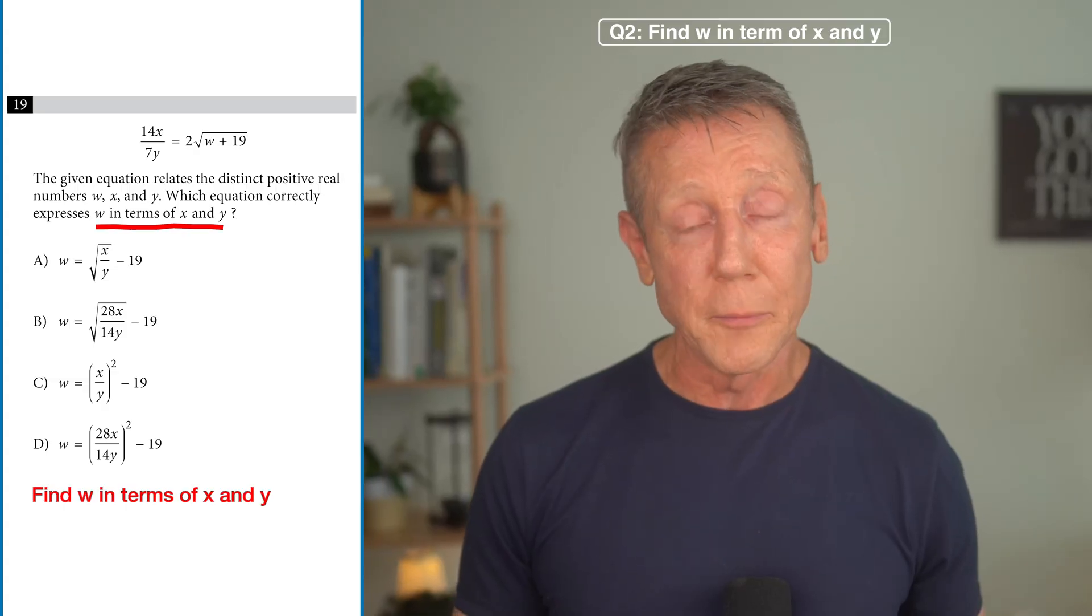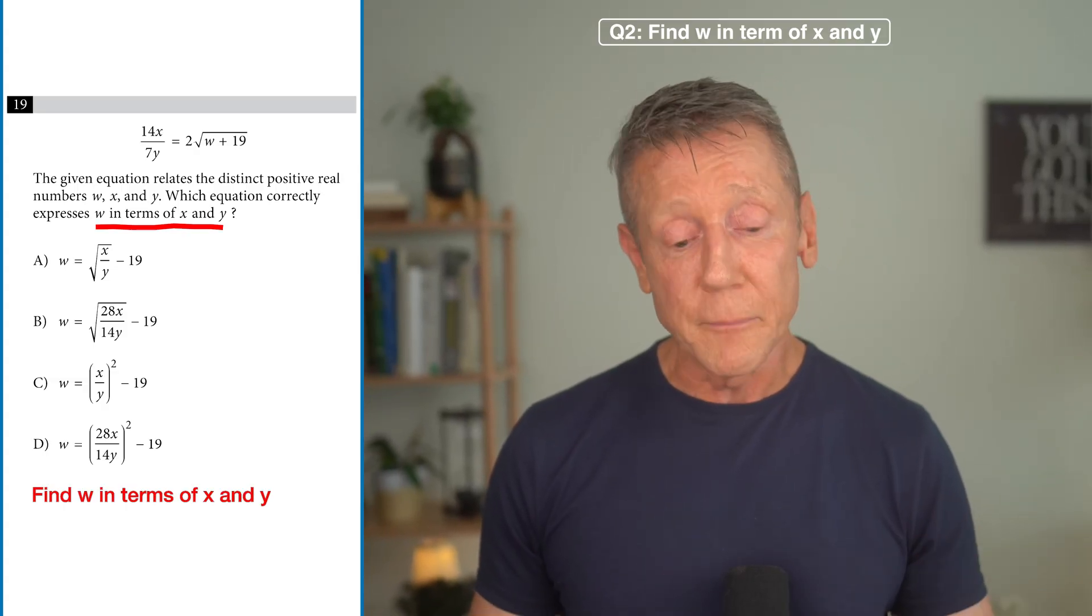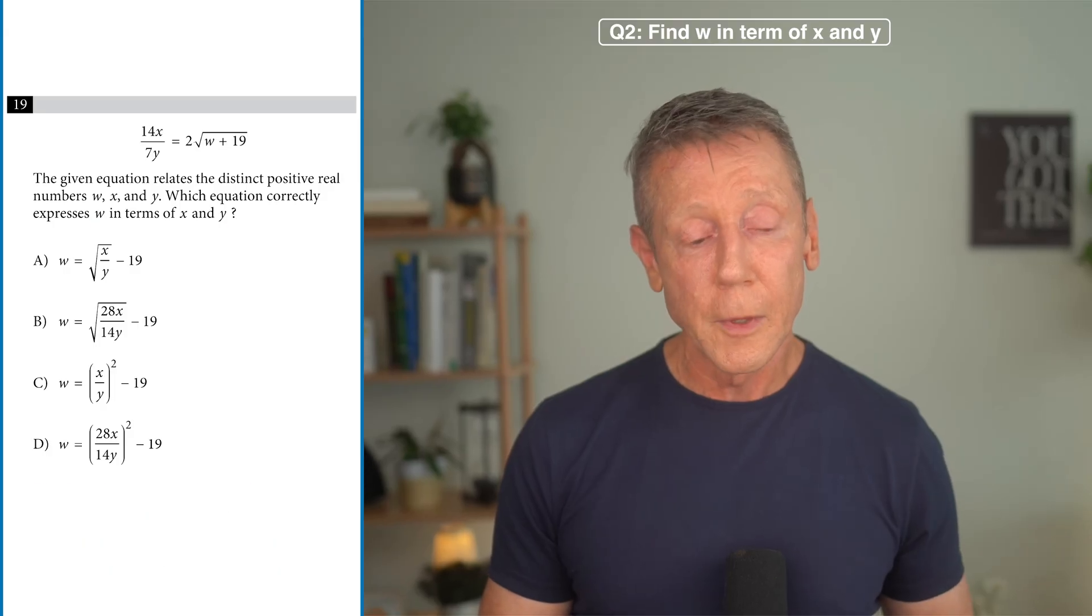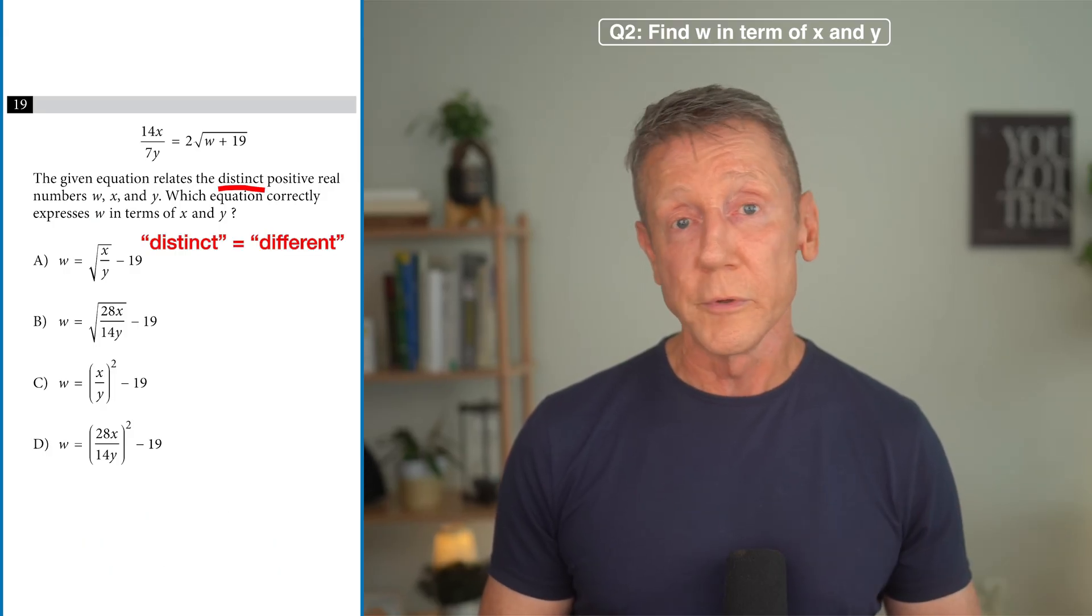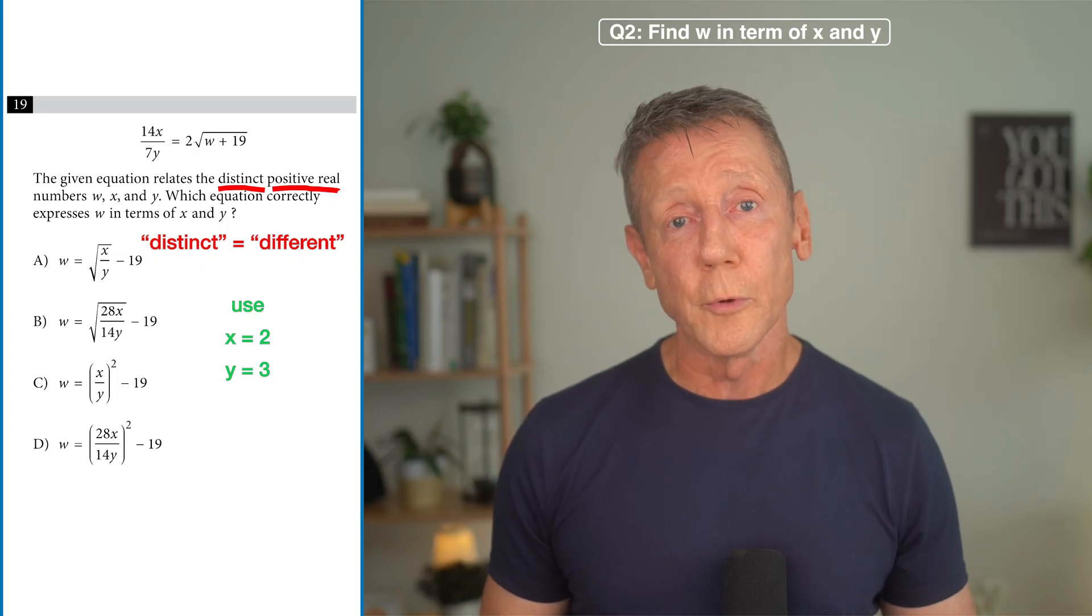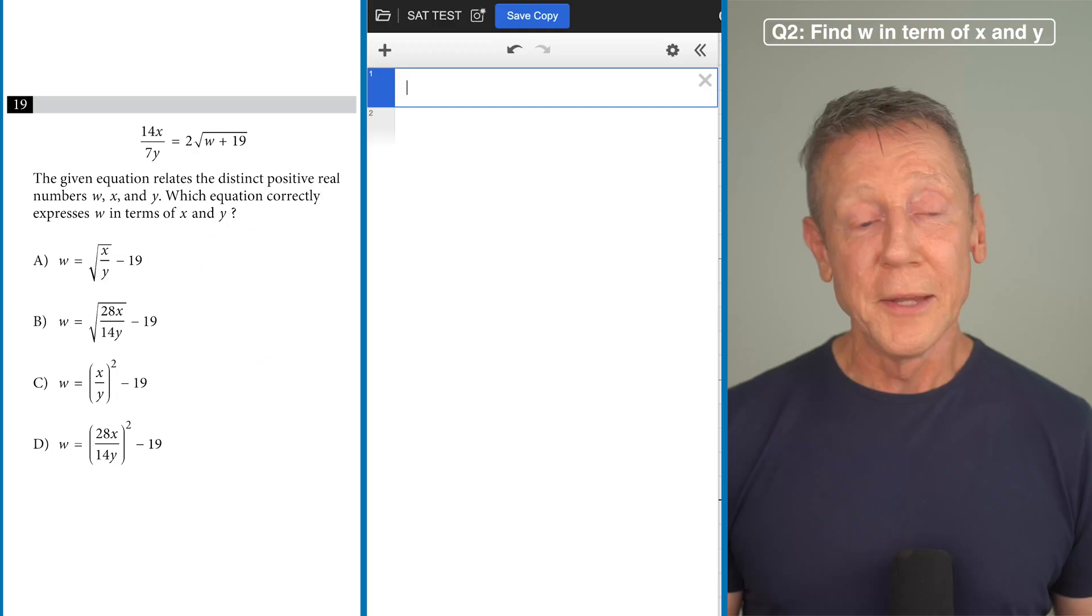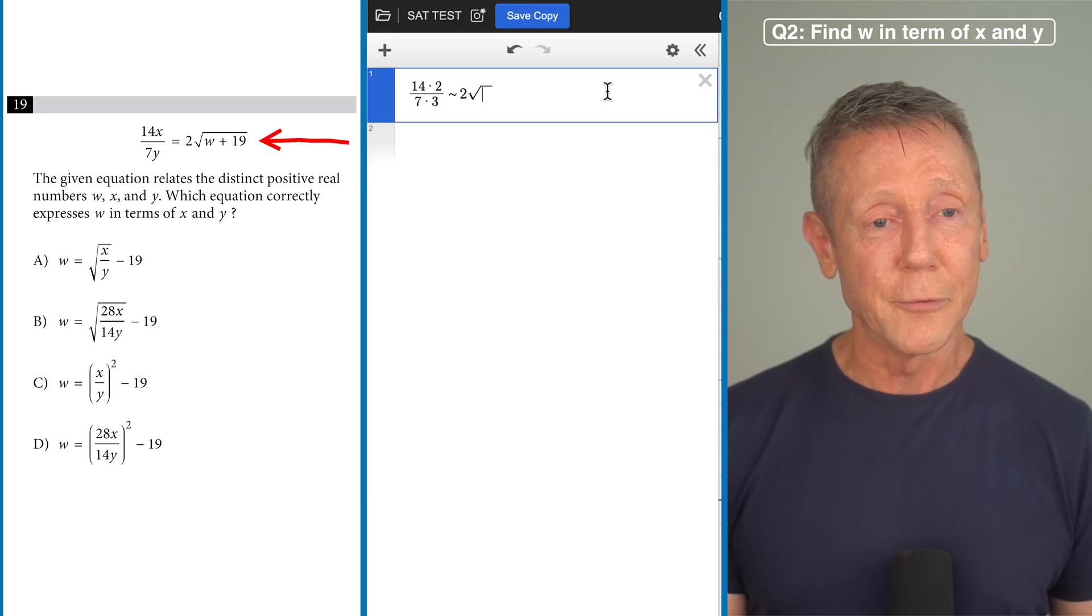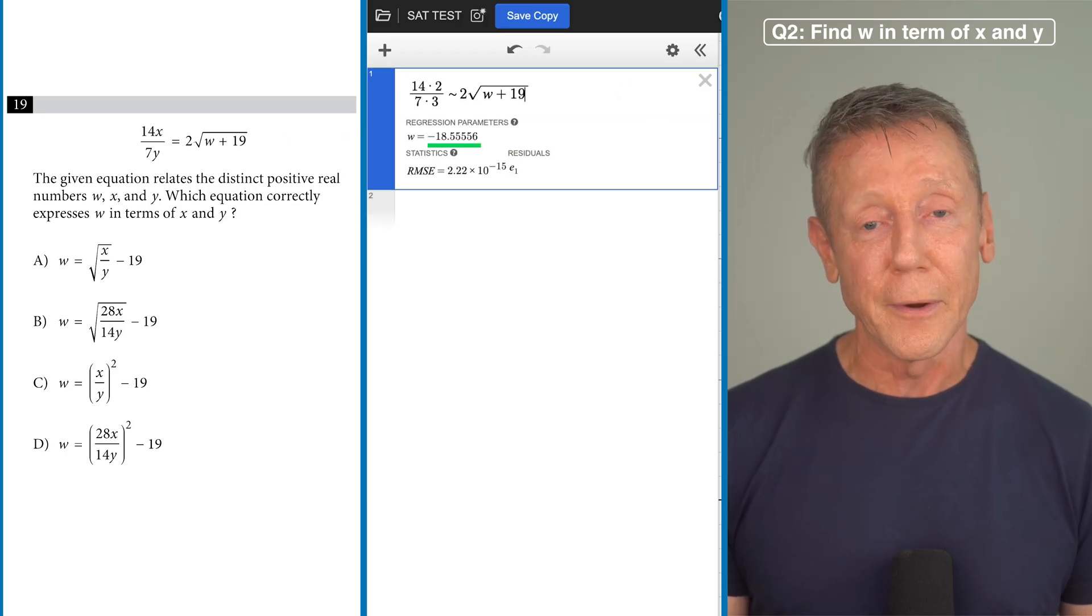This next one I want you to find W in terms of X and Y. That's the same thing as finding an expression that's equivalent to W. Let's see if we can use 2 and 3 again. The question says distinct which means different positive real values. All right so we're good to go with X equals 2 and Y equals 3.